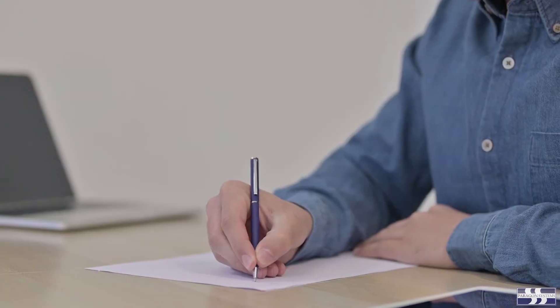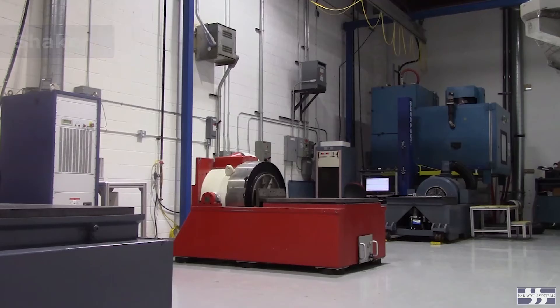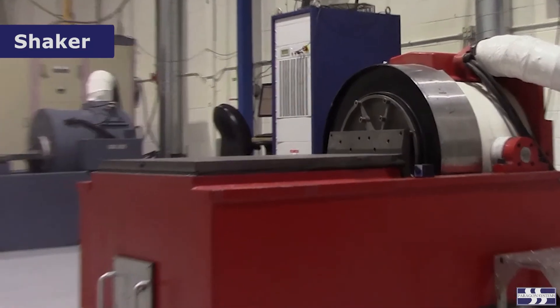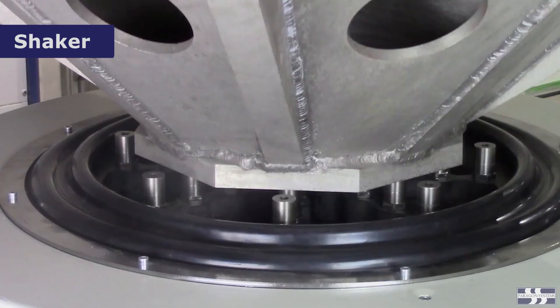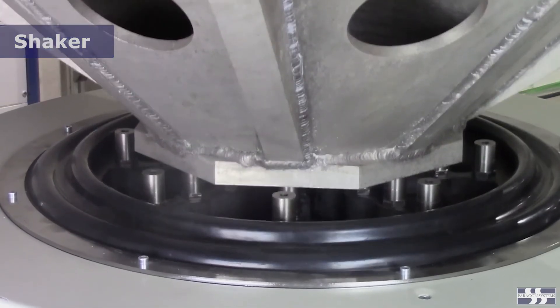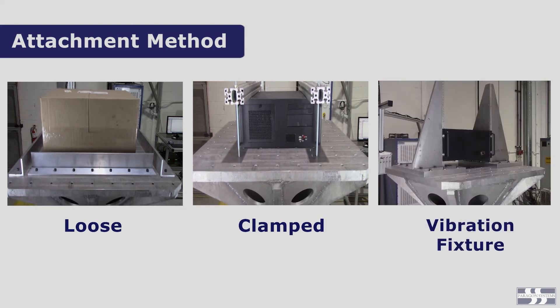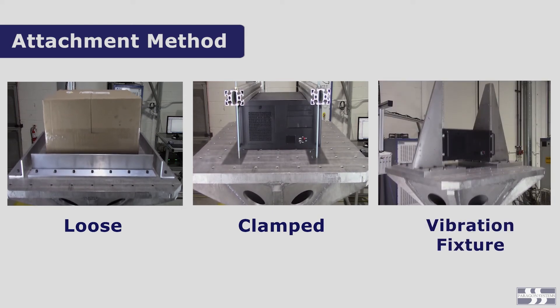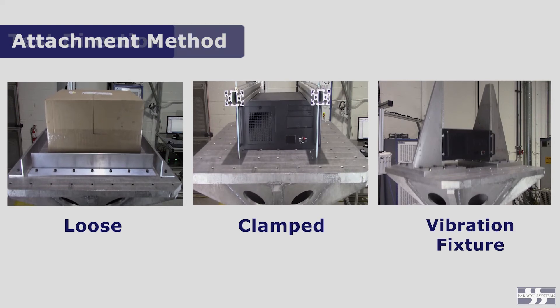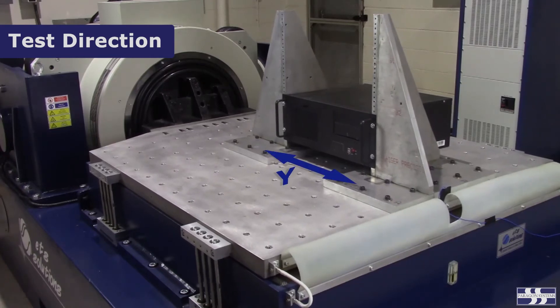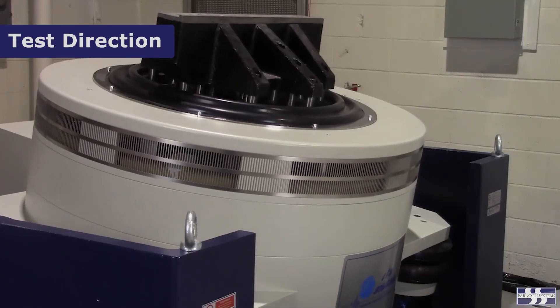Now that we have the test defined, we need a machine to vibrate the product. This machine is called a shaker. The shaker provides the control force required to move the sample as specified in the test method. For the sample to experience the controlled vibration, it must be connected to the shaker. This connection can be loose, it can be clamped, or it can be attached with a vibration fixture. Most vibration tests expose the sample to vibration in three different directions: X, Y, and Z.